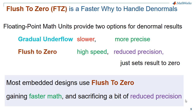Flush to zero is an alternate, faster way to handle denormal values. Most floating point math units provide two options for handling denormal results: gradual underflow, as previously discussed, or flush to zero. Flush to zero simply sets a denormal result to zero immediately. It gives higher speed, but it reduces precision for very small values close to zero. Most embedded designs use flush to zero in order to get faster math.